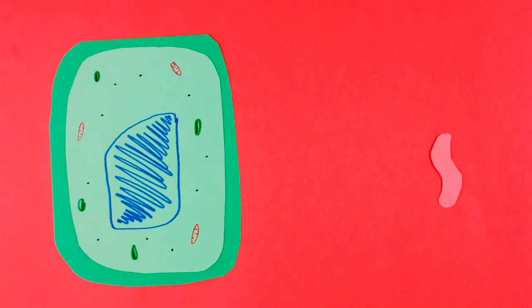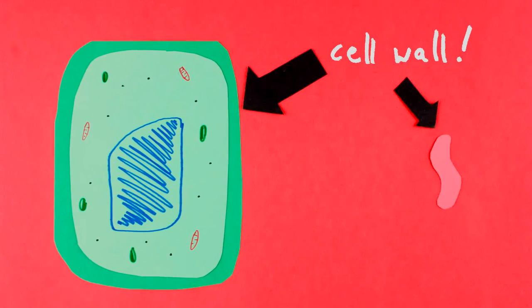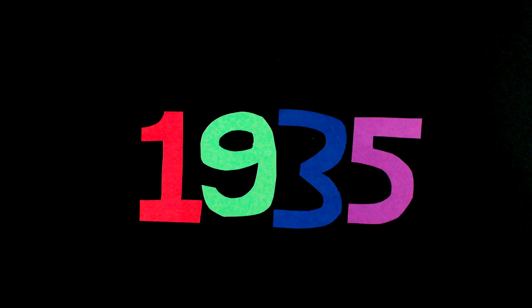Like plant cells, bacteria have cell walls to protect and support their cell membranes. These cell walls are what give the bacteria their shapes. But something weird happened almost a hundred years ago that told us this isn't always true.